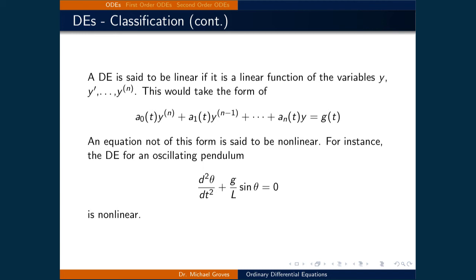These A₀, A₁, Aₙ-type terms are functions of T representing polynomials — terms like T, T squared, T cubed — and it does not include any non-linear terms. That's the essential difference between a linear and a non-linear differential equation. The bottom example is non-linear: it has the double derivative of the angle of a pendulum as a function of time, plus the acceleration due to gravity over the length of the string times sine θ equals zero. The sine θ term makes this a non-linear differential equation.